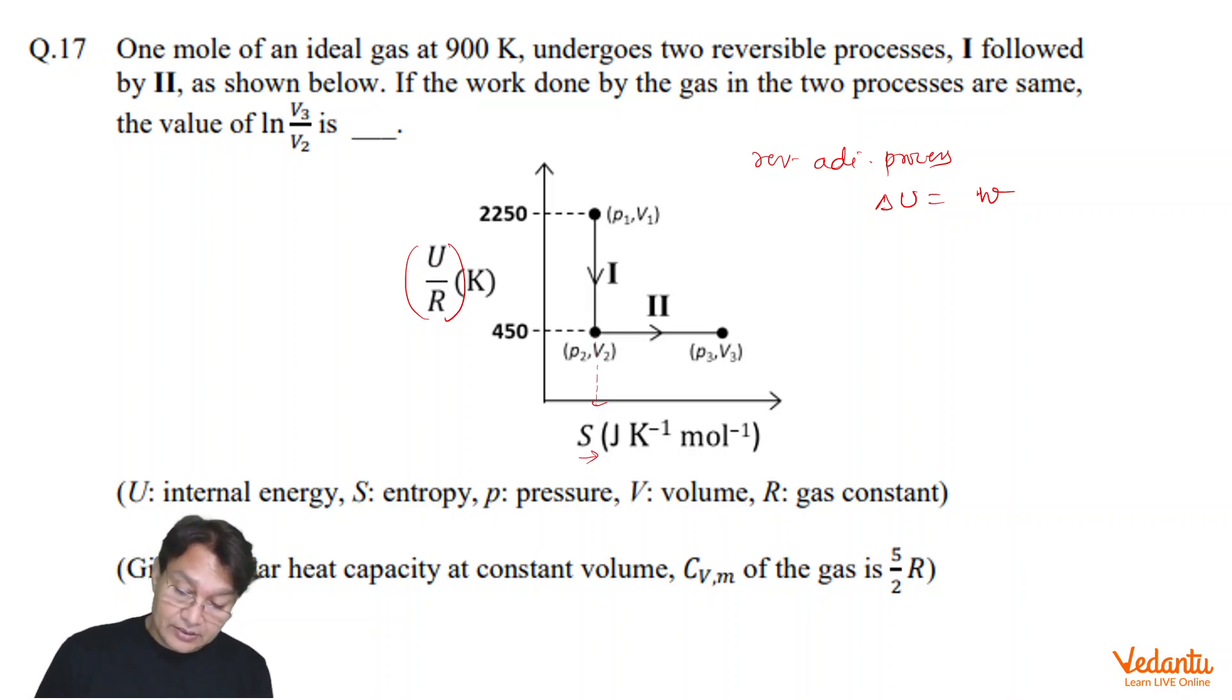Second hint is that 450 minus 2250 equals minus 1800. And this minus 1800 equals delta U by R, because R is not going to change. So this value is U1 by R, and this value is U2 by R. So U2 minus U1 by R equals minus 1800. That gives us the value of delta U in this process equals minus 1800 R. These are some clues in the problem.